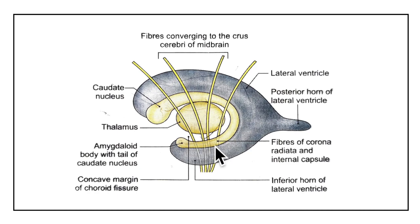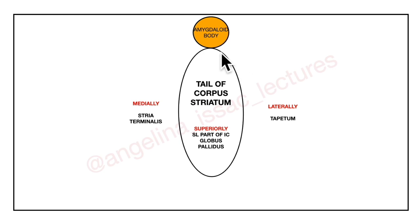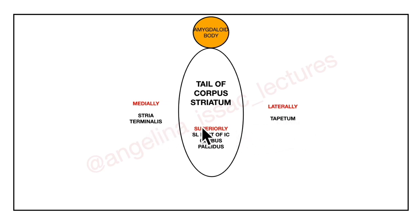The tail of the caudate nucleus forms the roof of the inferior horn of the lateral ventricle, and it ends by joining the amygdaloid body. In terms of relations: medially it is related to the stria terminalis, laterally to the tapetum, and superiorly to the sublentiform part of the internal capsule as well as the globus pallidus.